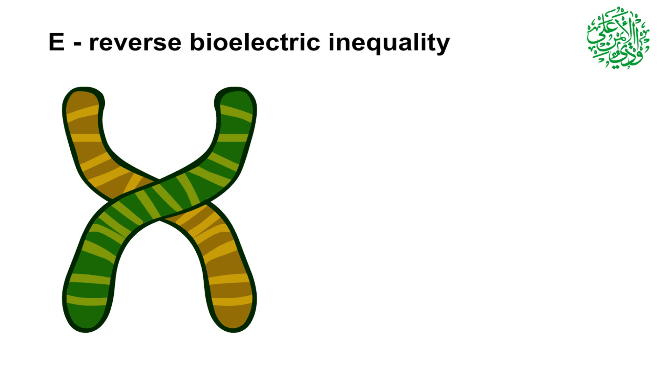Reverse bioelectric potential difference. In this form of inequity, which is rare, the bioelectric charge of chromosome A1 that should be plus five millivolts is reversed and changes to minus five millivolts. Also, the bioelectric charge of chromosome B1 that should be minus five millivolts is reversed and changes to plus five millivolts.